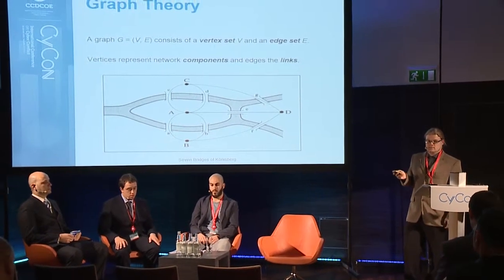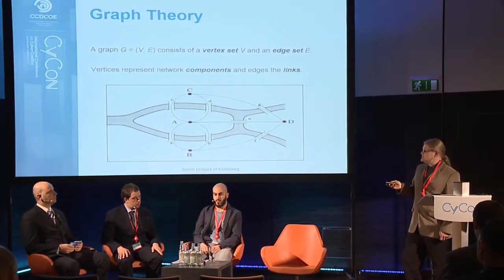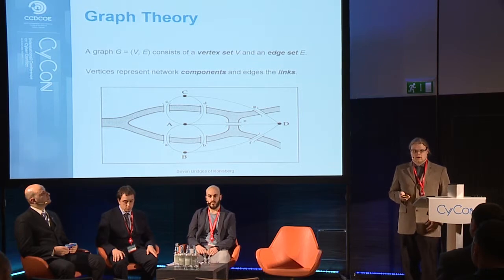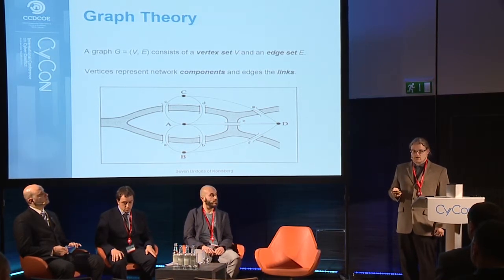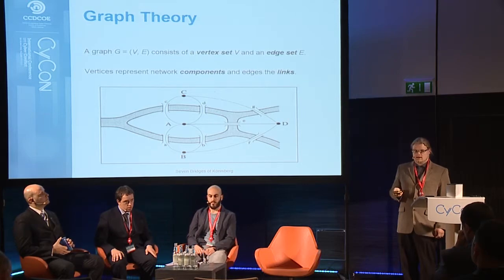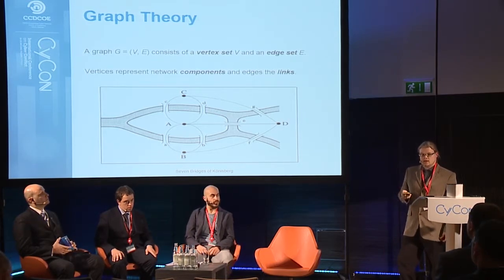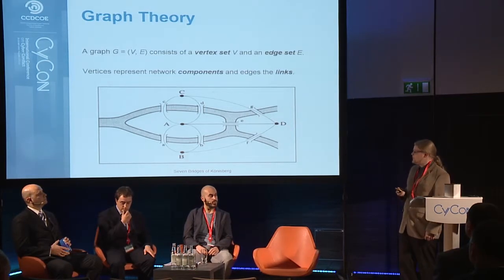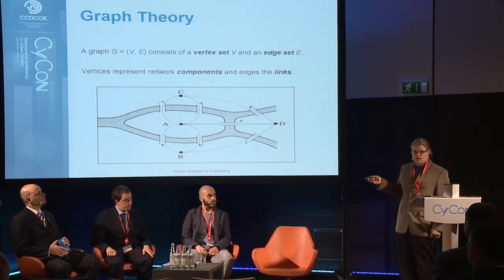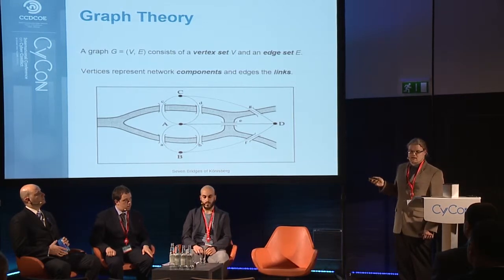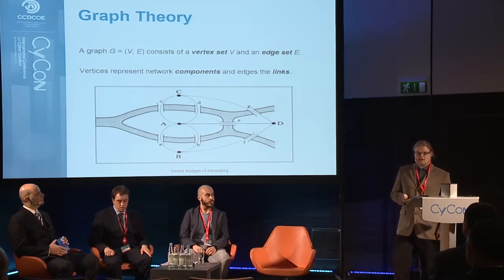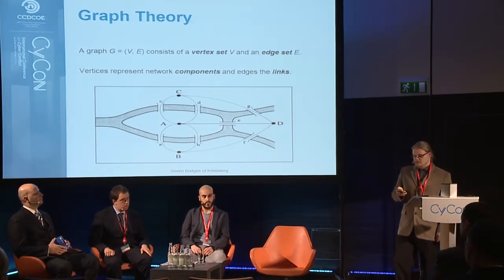In a graph there is a vertex set and an edge set. In this picture the edges are the bridges of Königsberg and the vertices are the islands. But in a computer network, the computers, routers, and databases are the vertices, and the edges are the links between those components. So what do you think — is it possible to walk through all those bridges exactly once and return to the starting point? No, it isn't possible. Euler had a really nice proof showing it isn't possible.